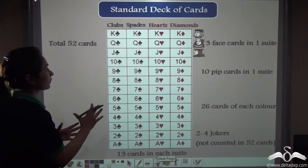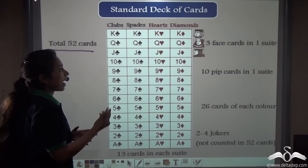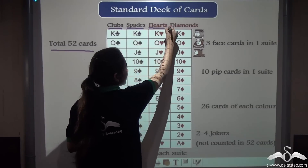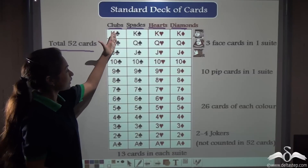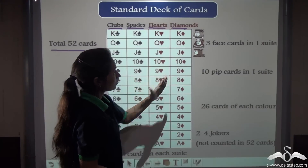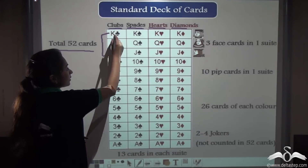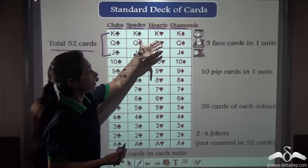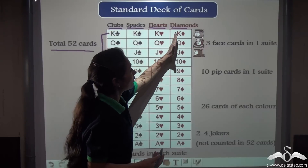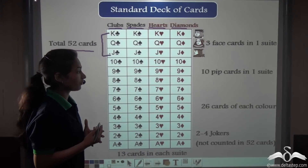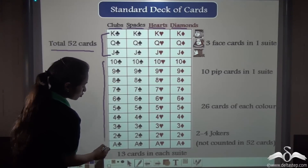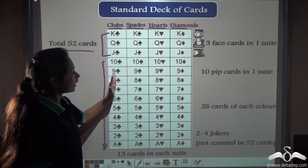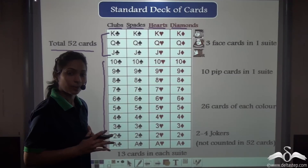So in total there are 52 cards divided into 4 categories — Clubs, Spades, Hearts and Diamonds — represented by their respective symbols. K, Q and J are the 3 face cards present in each suit, giving 12 face cards total. The remaining cards from Ace to 10 are Pip cards; there are 10 per suit, giving 40 Pip cards in total.